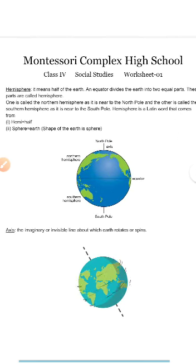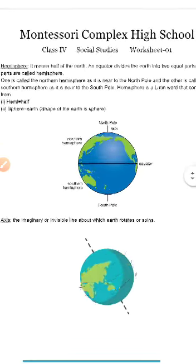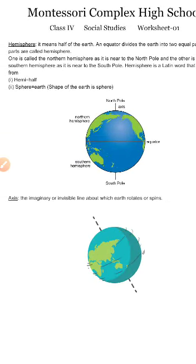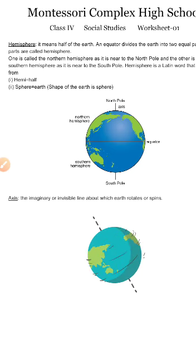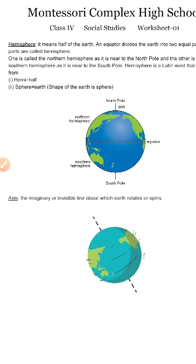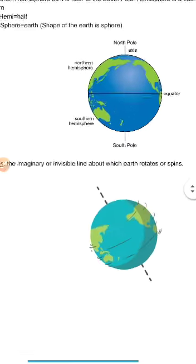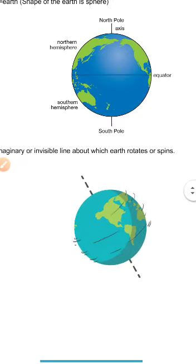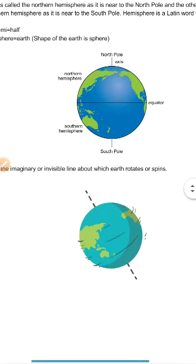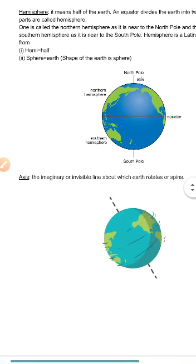Now let's talk about the axis. The imaginary or invisible line about which the earth rotates or spins is the axis. The earth actually spins — it rotates in one place, like a spinning top or a ball spinning on a needle. We imagine an imaginary line on which the earth spins. As you can see here, the earth moves like this on its own axis.